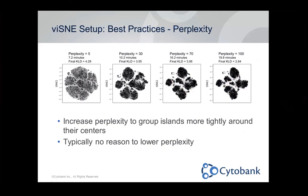Another advanced setting is perplexity, with a default of 30 in Cytobank. It controls how tightly around their centers these events are grouped. If you want more space between islands, you can increase the perplexity. There's typically no reason to lower it. In this example, once you get up to 70, there's not a material increase up to 100. Tweak these settings until you find a Visne plot with a good representation of all your data.